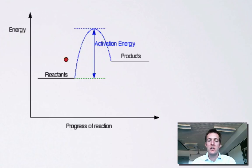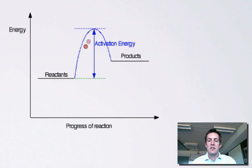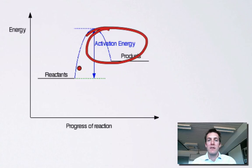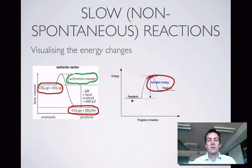Here's another endothermic change, again showing the activation energy as the difference between the start and the top of the hump — and it doesn't matter whether we're talking about an endothermic or exothermic reaction. What we look at to decide whether a reaction is slow or non-spontaneous is the size of this activation energy. If it's large, particles are unlikely to have enough energy to react at low temperatures, and we'll have to give the reaction a kickstart. The next two films on kinetics will cover collision theory and what particles actually have to do to react.